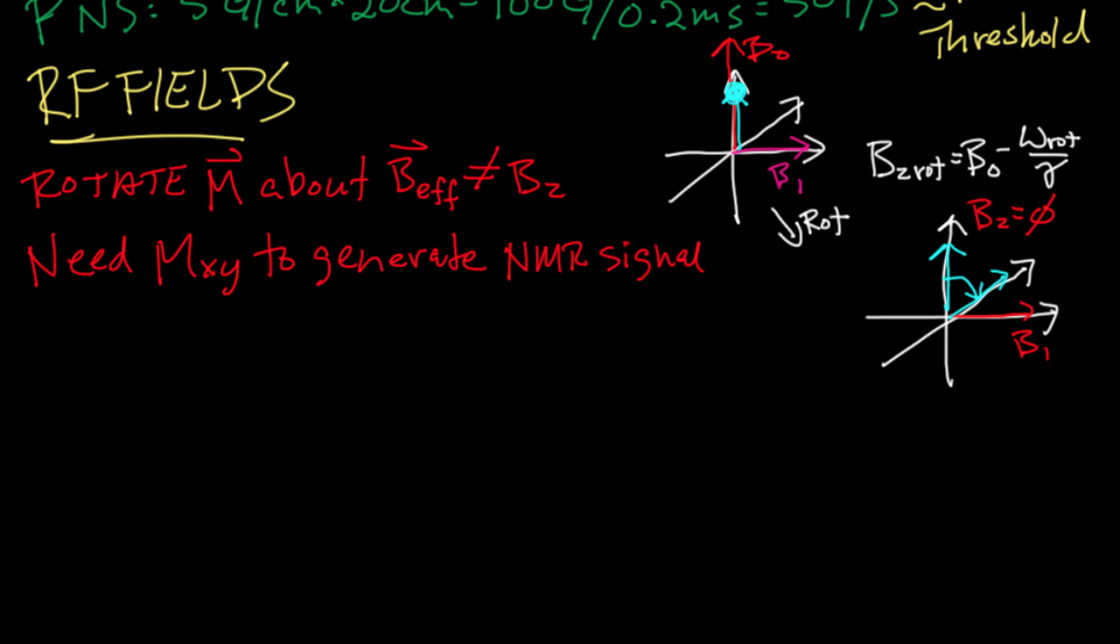So what that tells you is that the application of transverse magnetic fields applied in the rotating frame at the Larmor frequency are effective in rotating the magnetization away from the z-axis while transverse magnetic fields in the laboratory frame are not. Okay, so now once you have transverse magnetization, it's easier to think of how that generates detectable NMR signals by transforming back to the laboratory frame. Once you have transverse magnetization in the laboratory frame, that magnetization is actually rotating at the Larmor frequency, producing a rotating magnetic field that can be detected inductively with antennas.